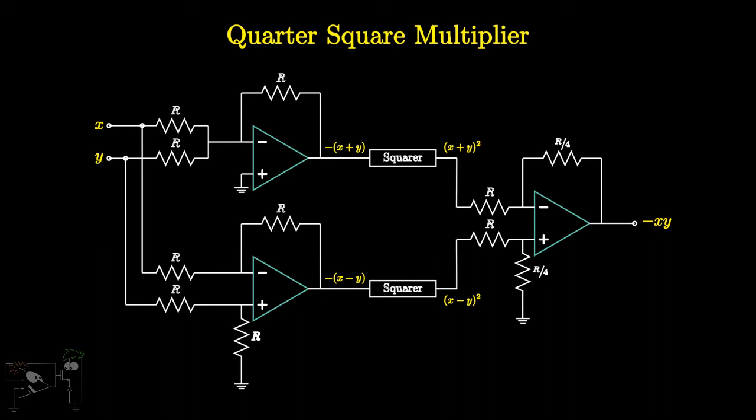Another approach for multiplying two signals would be by using the log and antilog amplifiers which we saw in the previous video. The algebra of logarithms is as shown. So, if we take the log of the two signals, add them up and then take the antilog of the result, then we would get the product of the two signals.